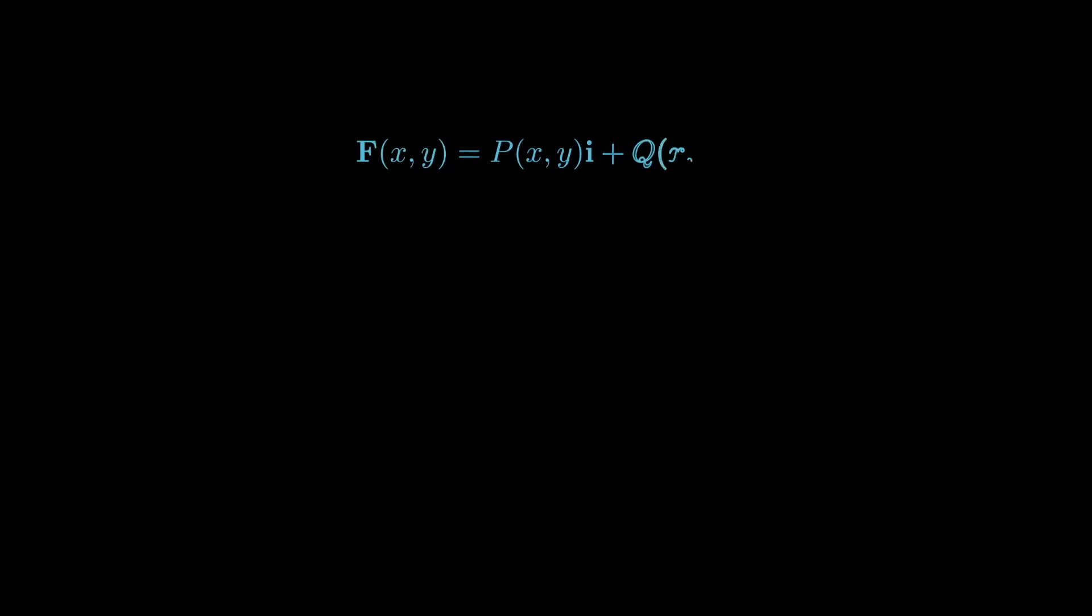Let's recall that if we have a vector field F which is given by P in the ith direction plus Q in the jth direction, then the one-form associated to F is given by ωF which is just P dx + Q dy.